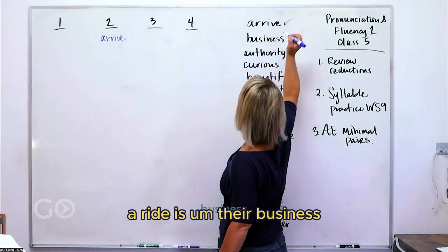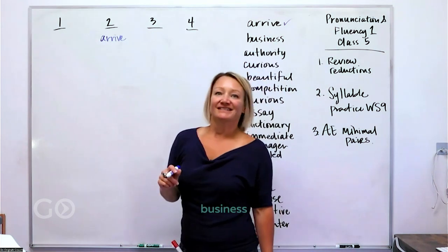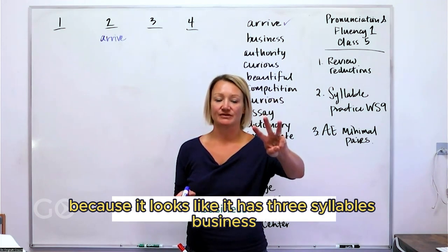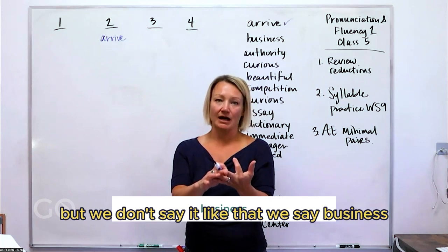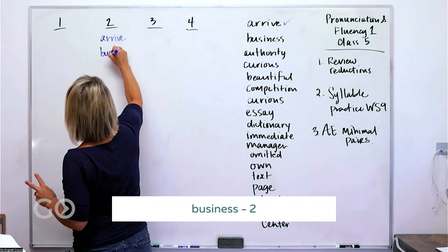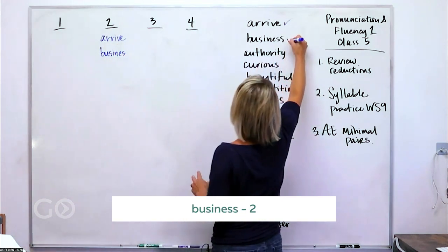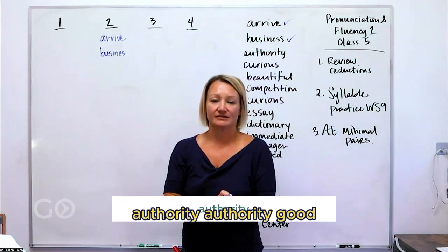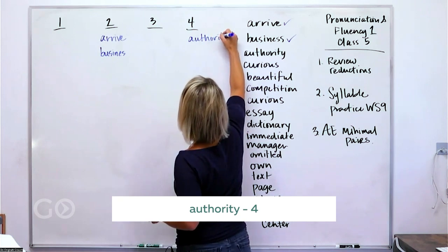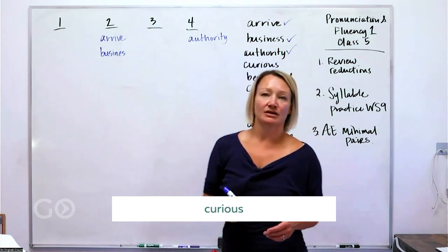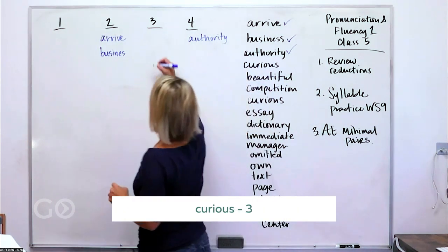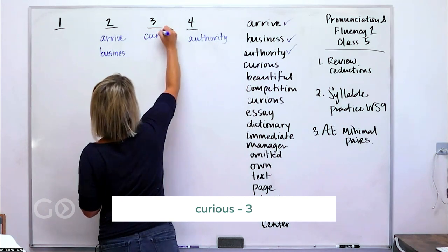Business. This is a little bit tricky because it looks like it has three syllables, business, but we don't say it like that. We say business. So it has two. Authority. Authority. Curious. Curious. What do you hear? Three. Curious.